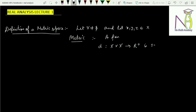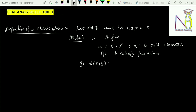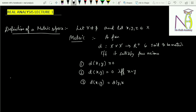This is said to be a metric if and only if it satisfies few axioms. The first axiom is that the distance between any two points is always greater than or equal to zero. The second axiom is the distance between any two points is zero if and only if x equals y. The third property is the distance between x and y equals the distance between y and x. The last one is the triangle inequality: d(x,y) ≤ d(x,z) + d(z,y). This property is known as the triangle inequality.